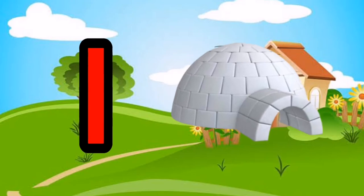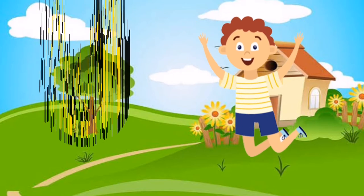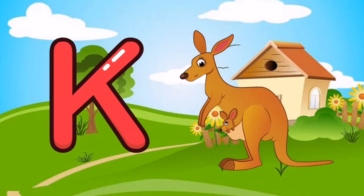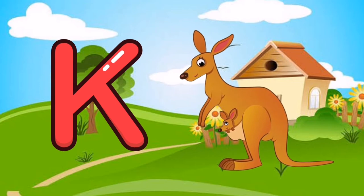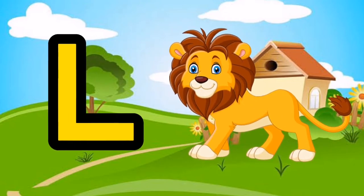I is for Igloo, I-I-Igloo. J is for Jump, J-J-Jump. K is for Kangaroo, K-K-Kangaroo. L is for Lion, L-L-Lion.